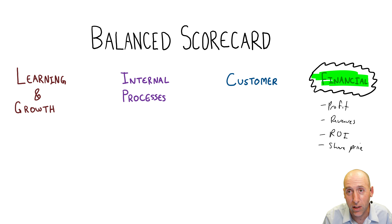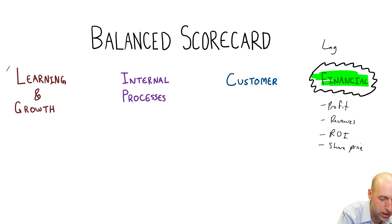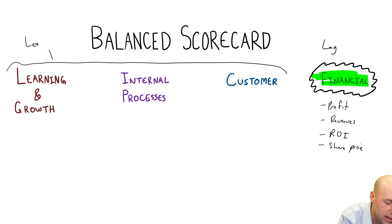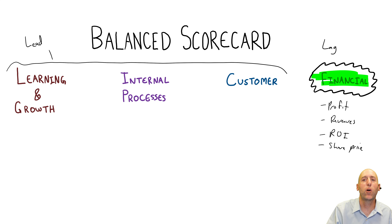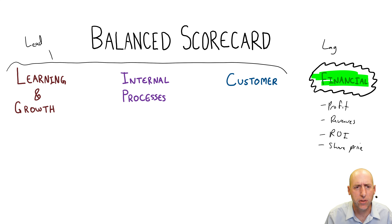There's nothing wrong with wanting to be financially successful. You've started a business, risked your money, spent your time and energy — you should want to be financially successful as a manager or owner. But what the balanced scorecard says is that financial results are just that: they are outcomes. You're not going to have financial success if you don't satisfy three other areas first. They use the term lagging indicator — it comes at the end — whereas the other areas are called leading indicators.